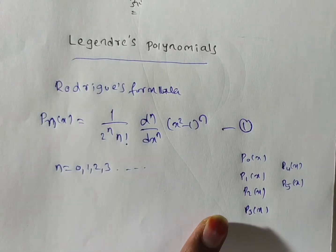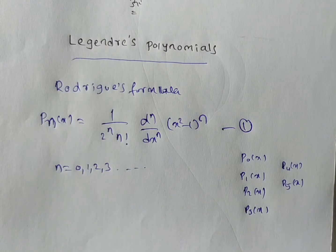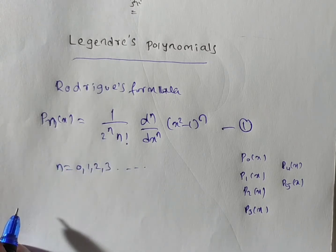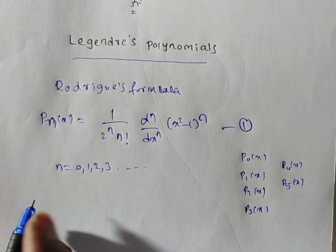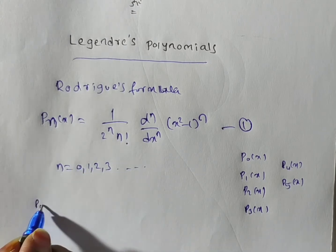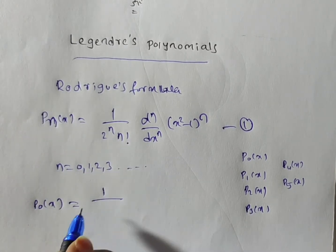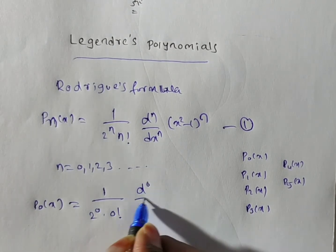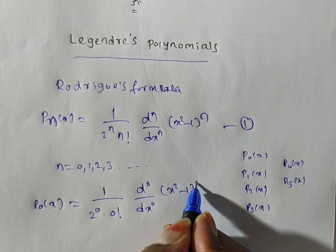In this video I will solve P1 and P2. Now to find P0, put n equal to 0 in equation number 1, that is in the Rodrigues' formula. If you put n equal to 0, then Pn(x) is equal to 1 by 2 to the power 0, into 0 factorial, into d to the power 0 by dx to the power 0, times of (x squared minus 1) whole to the power 0.